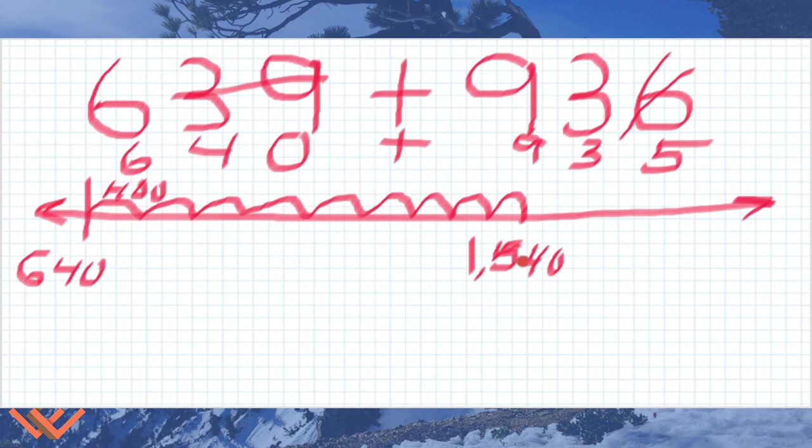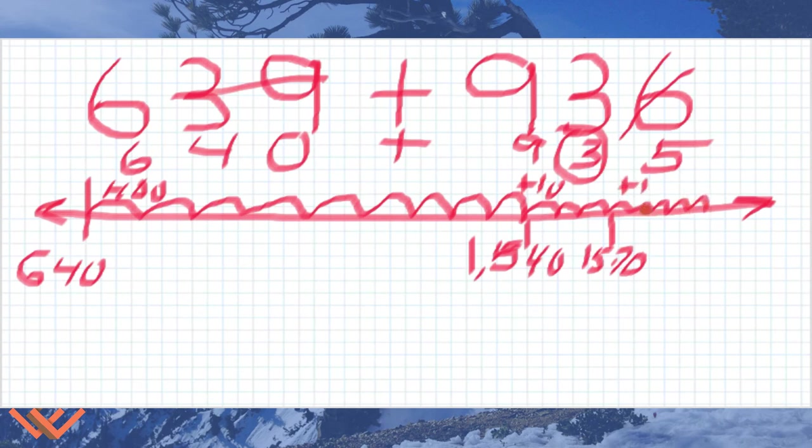Next up are the tens. So I have 1,540. And how many tens do I have? I have 3 tens because that's in the tens column. So 1, 2, 3. These are plus 10. 1,540, 1,550, 1,560, 1,570. And how many ones? I don't have any more ones over here because remember we made that a 10. So we have 5. So I'm going to do 1, 2, 3, 4, 5. Those are plus ones each time. 1,571, 72, 73, 74, 75. So 1,575.